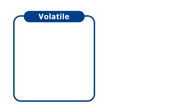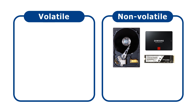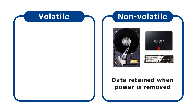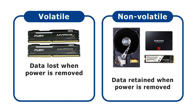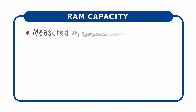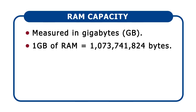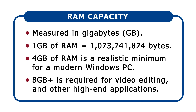Computer storage can be volatile or non-volatile. Non-volatile storage includes hard drives and SSDs, as these maintain their contents when power is disconnected. In contrast, modern RAM is volatile storage that loses its data when the power is switched off. RAM is, however, the fastest kind of storage available and is used to hold programs and data when a computer is running. RAM capacity is measured in gigabytes, with one gigabyte being just over one billion bytes. Today, four gigabytes is the minimum recommended RAM for a modern Windows PC, with eight gigabytes or more required for most video editing and other high-end applications.